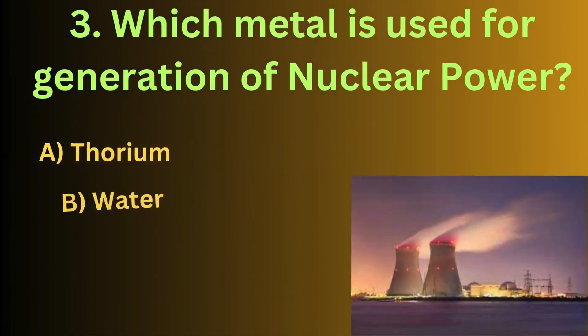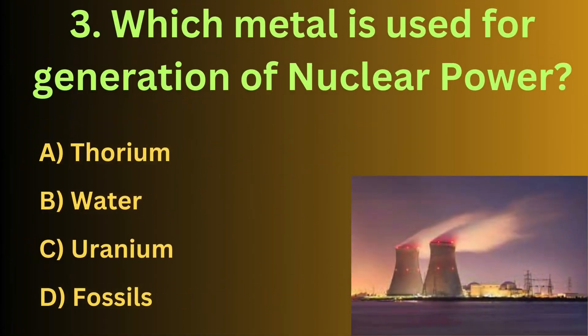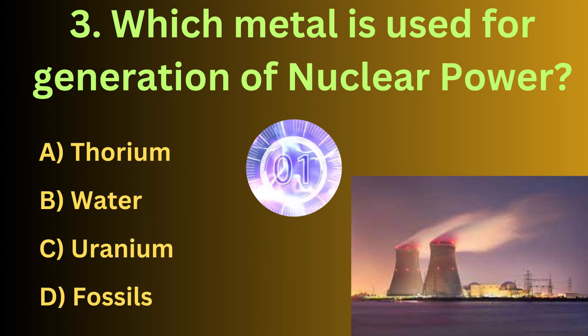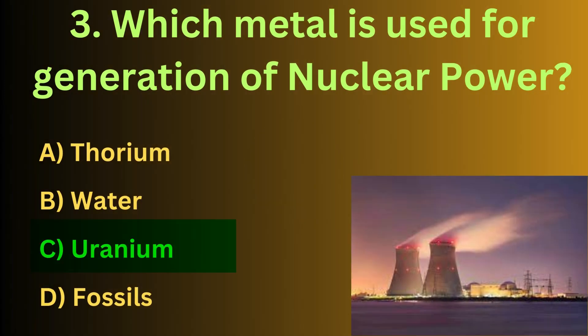Which metal is used for generation of nuclear power? The correct answer is option C, uranium.